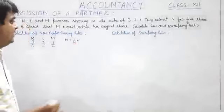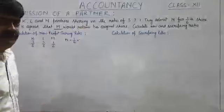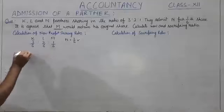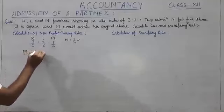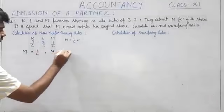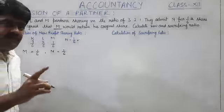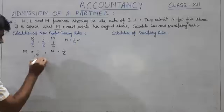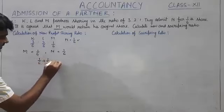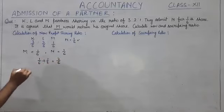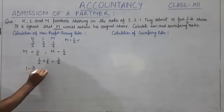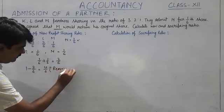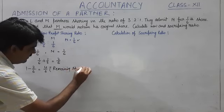M would retain his original share, that means M's share will be 1/6. So now we have two shares: M as well as N. M's share will be 1/6 and N's share is also 1/6. You know profit of the firm is always 1, so first of all we will add M's share and N's share, and that will be 1/6 plus 1/6, that is 2/6. Now profit of the firm is 1, 1 minus 2/6, so it will come 4/6. This is the remaining share.